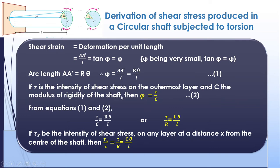Substituting AA-dash = R·theta into the strain equation gives phi = R·theta / L. We know that shear stress divided by shear strain equals modulus of rigidity C, so phi = tau / C. Combining these two equations: R·theta / L = tau / C, which gives the important equation tau / R = C·theta / L. This gives the shear stress of a shaft subjected to a torque.